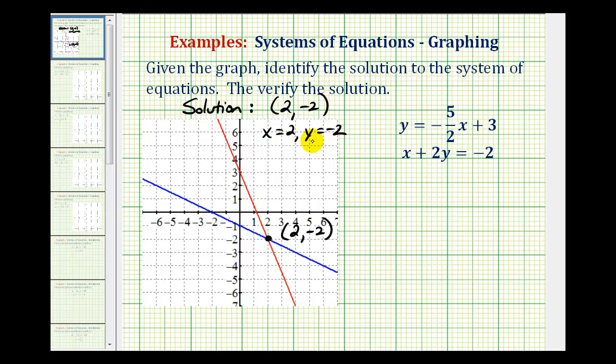Let's go ahead and verify this by substituting in two for x and negative two for y into both equations. For y equals negative five-halves x plus three, we would have negative two equals negative five-halves times two over one plus three. Notice how these two simplify out, so we're left with negative two equals negative five plus three. Well, negative five plus three is negative two. So these values do satisfy the first equation.